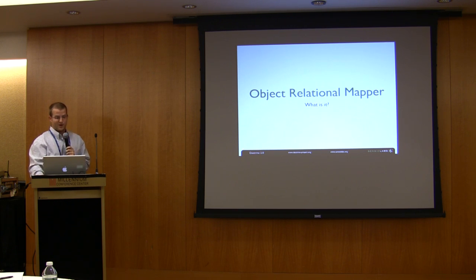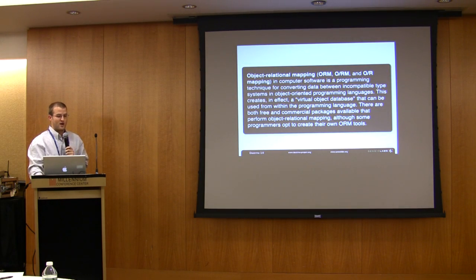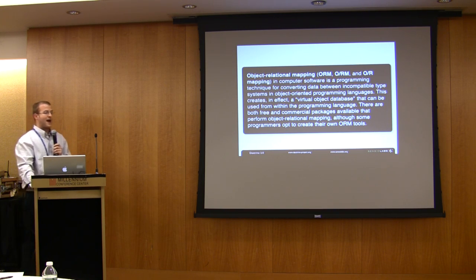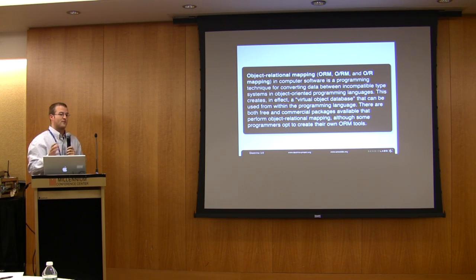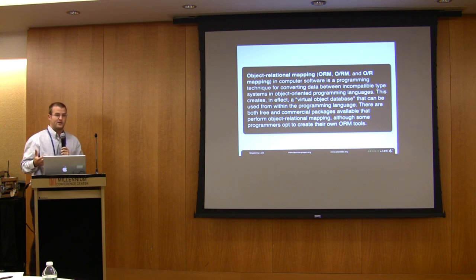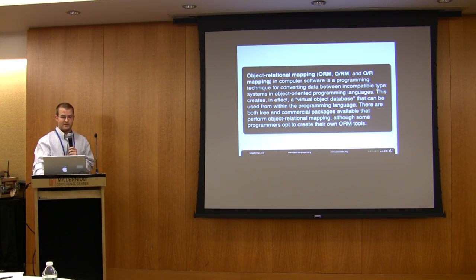So some of you may ask, what is an object relational mapper? The best definition I just pulled straight off of Wikipedia. But basically, this allows you to map two incompatible types. You have a relational database, and when you're dealing with a programming language, you have an object-oriented language. And you want to work with that data in an object-oriented way and be able to translate that data back into your relational database.